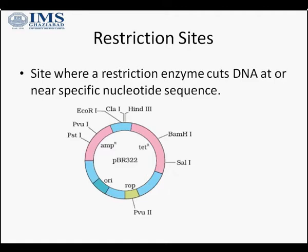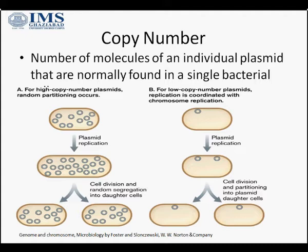The next essential feature is copy number. Copy number is the number of molecules of an individual plasmid normally found in a single bacterial cell — it refers to the number of naturally occurring copies of a plasmid. A cell can have a very high copy number, as shown in this figure. We can also have low copy number plasmids. However, a good cloning vehicle should have a high copy number so that we have multiple copies to make a recombinant plasmid.